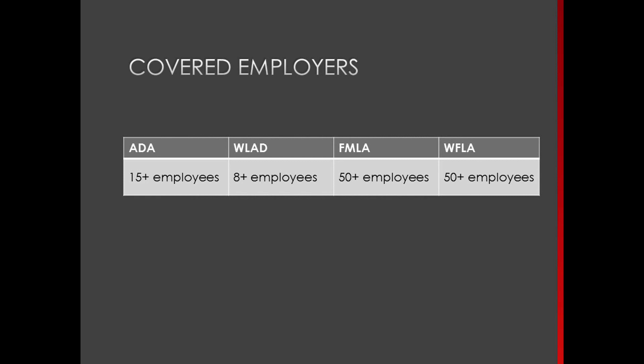We're going to start with a basic compare and contrast. First, who is covered? These laws have different standards. The most protective is the Washington Law Against Discrimination, which applies to employers with eight or more employees. The ADA applies to 15 or more. FMLA and the Washington Family Leave Act apply to 50 or more employees. If you have under eight employees, it's still best practice to comply with the disability discrimination laws. There's no reason to go through the FMLA paperwork rigmarole if you don't meet that threshold.